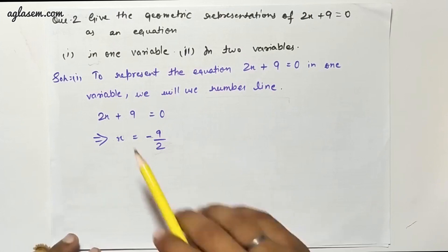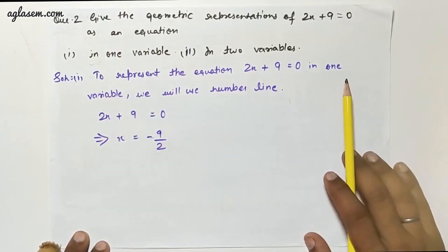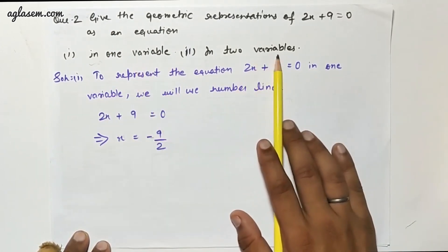Let's solve Question 2. Question 2 says: Give the geometrical representation of 2x plus 9 equals 0 as an equation in one variable and also in two variables.